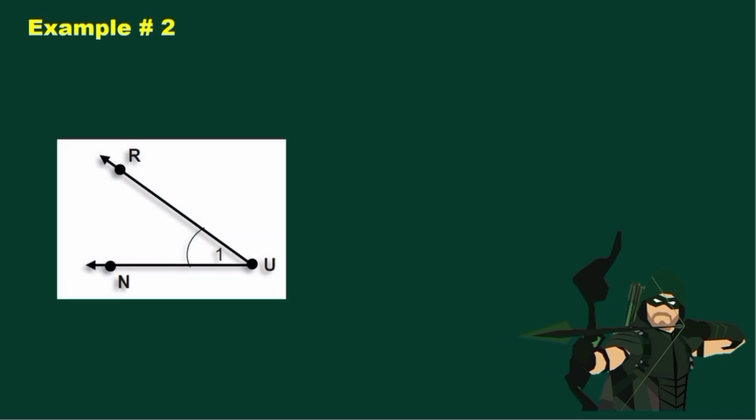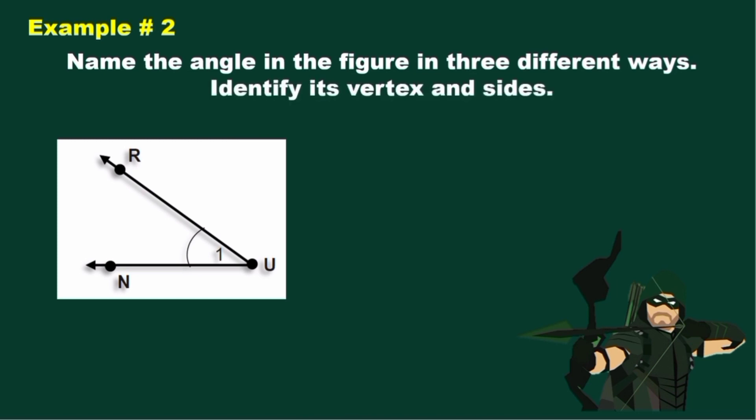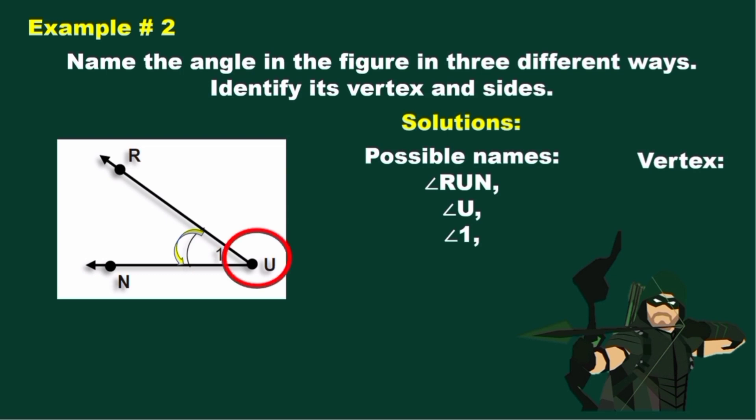Let's try example number 2. Now look at the illustration. Name the angle in the figure in three different ways. Identify its vertex and sides. Let's have our solutions. Here are the possible names using three different ways. Angle RUN, Angle U, and angle 1. For our vertex, we have U or point U. And for our two sides, we have ray UN and ray UR.